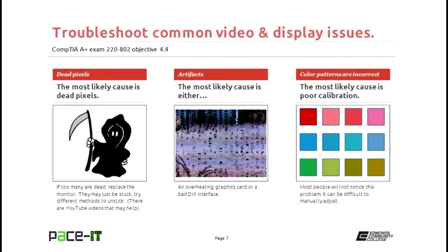Moving on — dead pixels. It is very common for flat panel displays to have dead pixels right out of the box. Most of the time we don't even notice them, and they really don't become a problem until you end up with too many. The easiest way to fix a dead pixel is to replace the monitor under warranty. It is possible that the pixels are just stuck, and there are different methods that purport to unstick stuck pixels — you can Google that and look at some YouTube videos. Some people have had luck doing that.